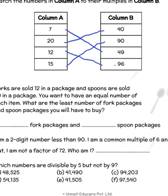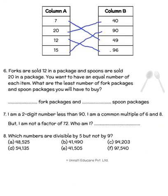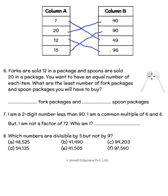Forks are sold in packages of 12 and spoons in packages of 20. We need an equal number of each item — one fork for every spoon. We need to find the least number of packages to buy, which means finding the common multiple of 12 and 20. Multiples of 12: 12, 24, 36, 48, 60. Multiples of 20: 20, 40, 60. We find that 60 is the common multiple.